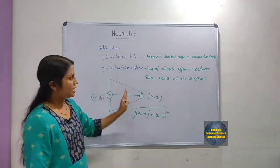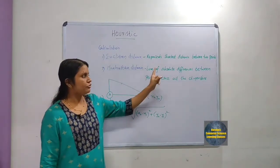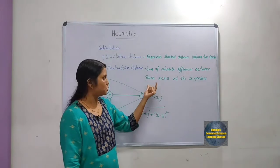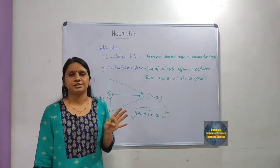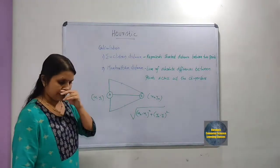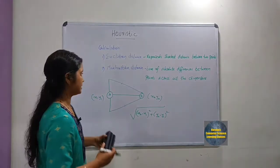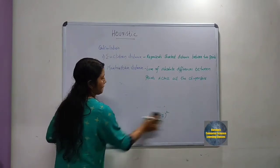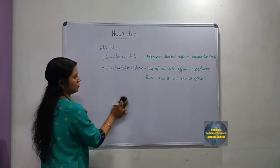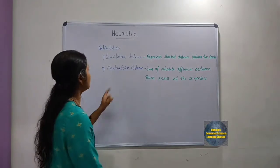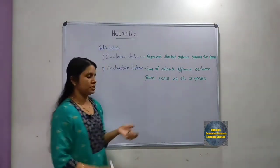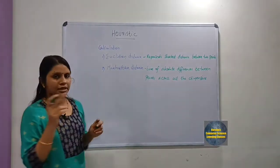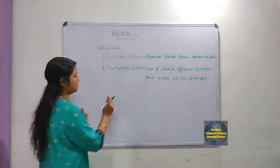The second distance is Manhattan distance. Its definition is the sum of absolute differences between the points across all the dimensions. I will explain this with an example using the eight-puzzle problem.